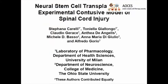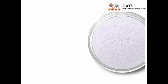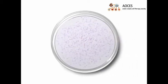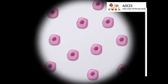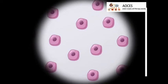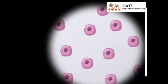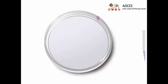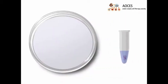The overall goal of this procedure is to describe in detail a contusion model of spinal cord injury in mice, followed by a transplantation of neural stem cells. This is accomplished by first labeling post-mortem neural precursor cells, or PMNPCs, with the vital tracer PKH26.